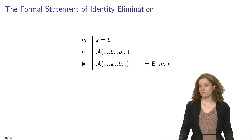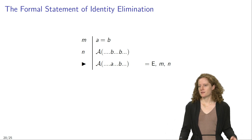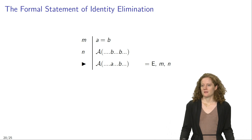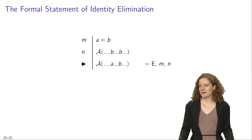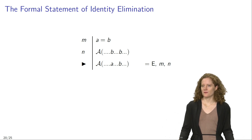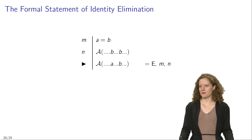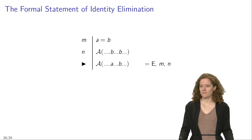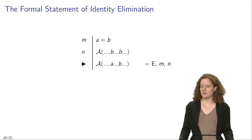Now this rule works symmetrically, meaning you can apply it to either the name A or the name B. Suppose that in line M of your proof you again have the identity statement A equals B, and in line N of your proof you have a sentence that ascribes the property F to B. You can then infer that the object A has this property as well, and justify this inference by means of identity elimination applied to lines M and N.